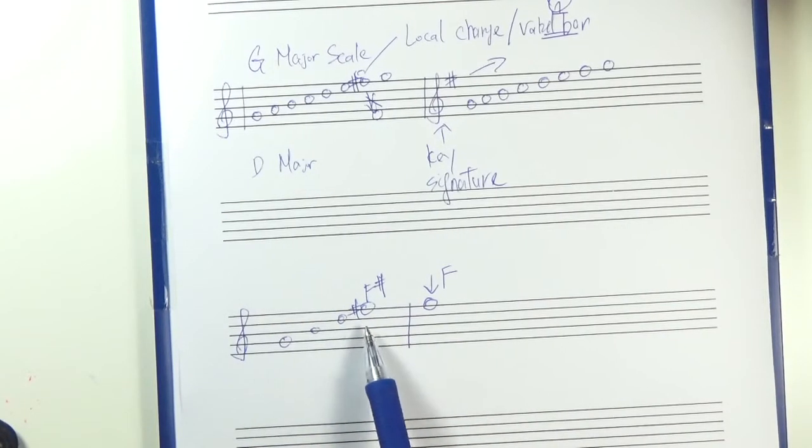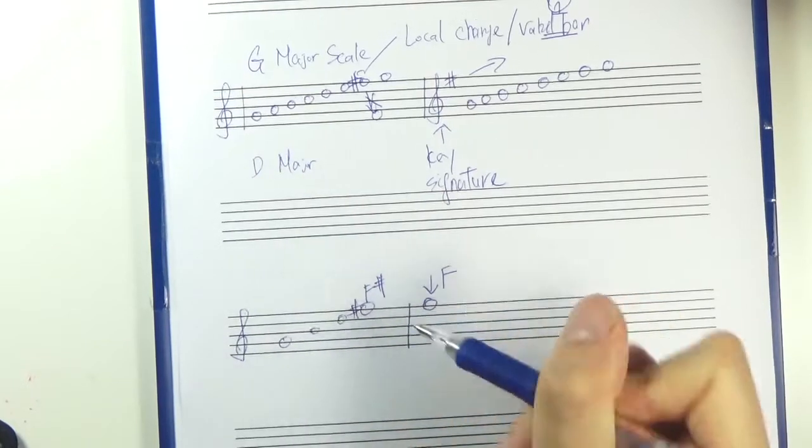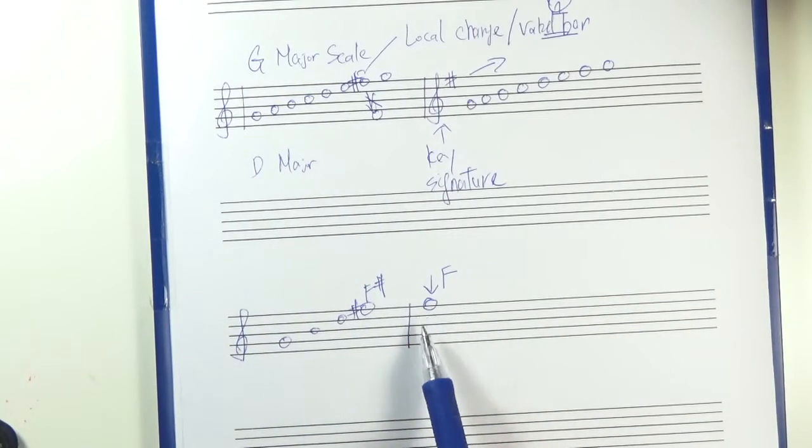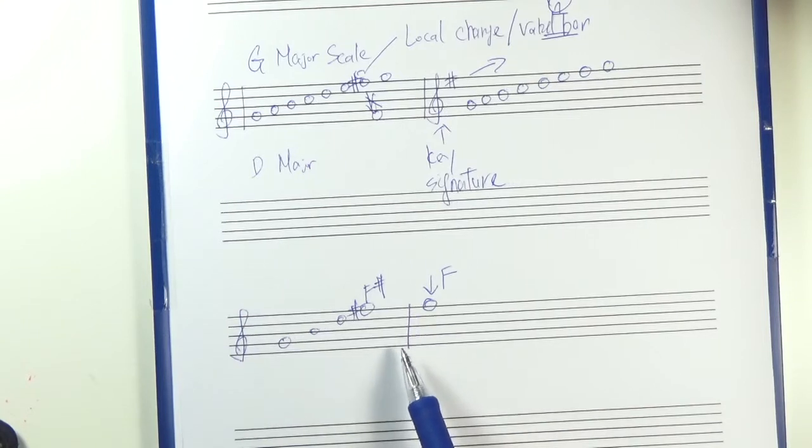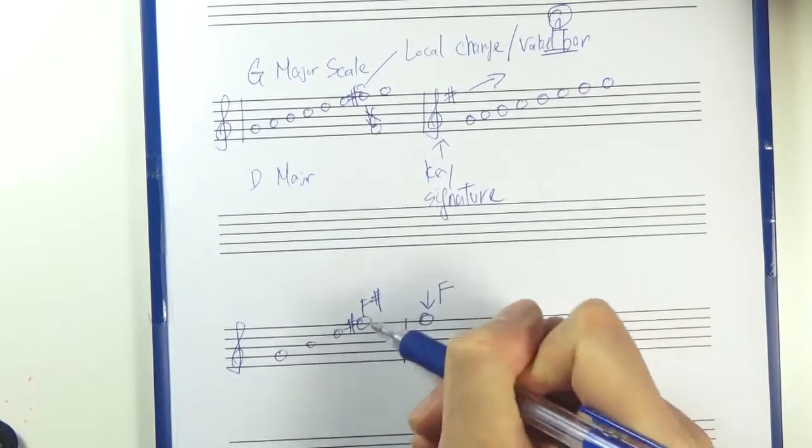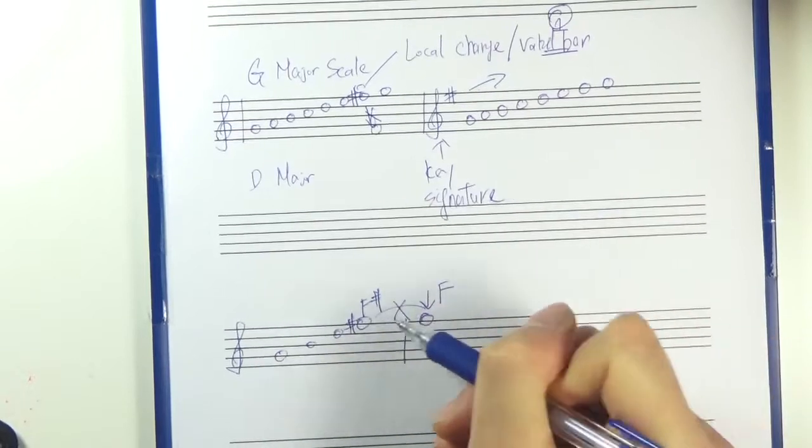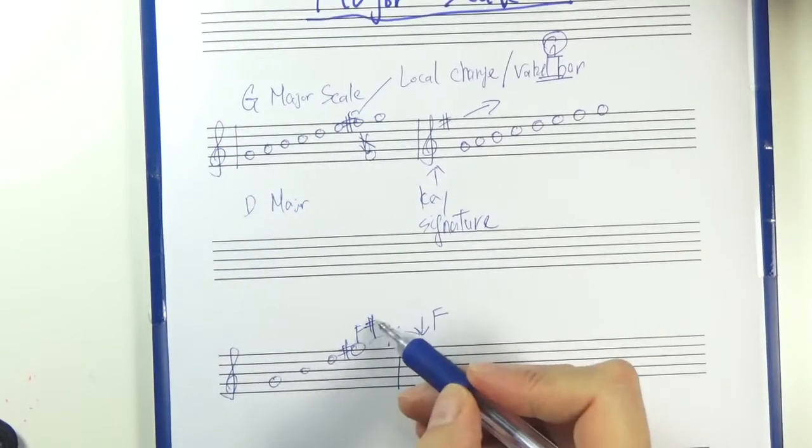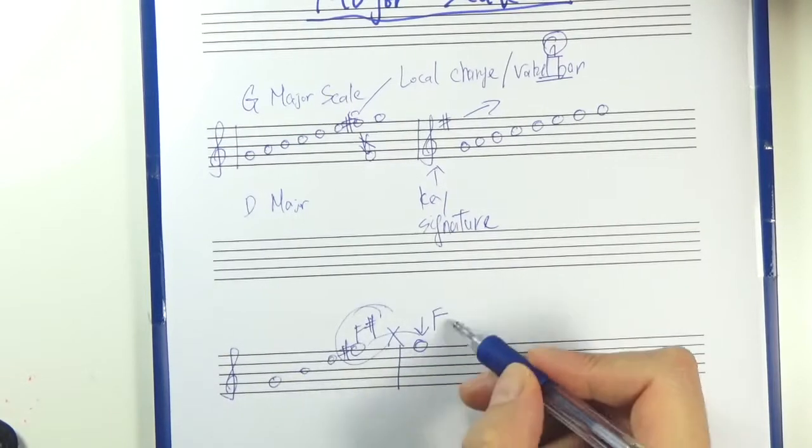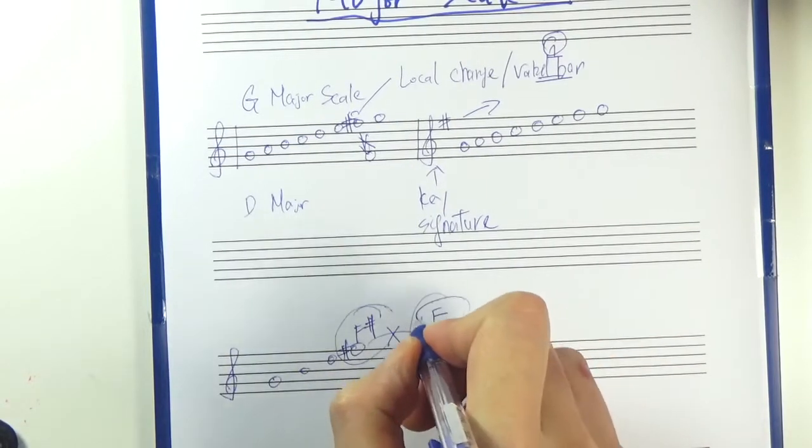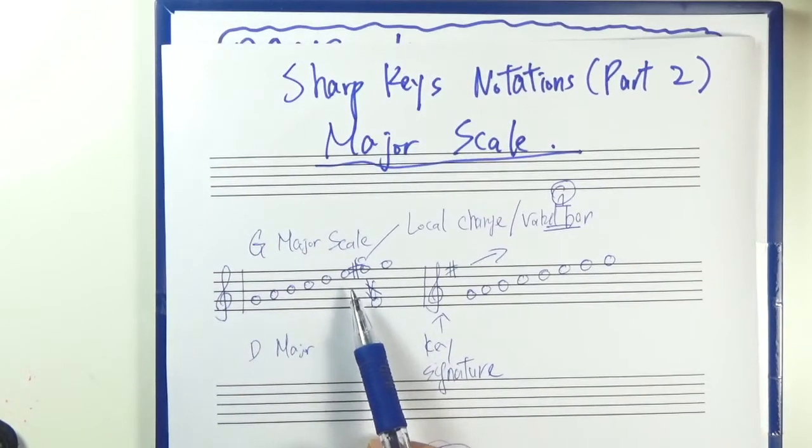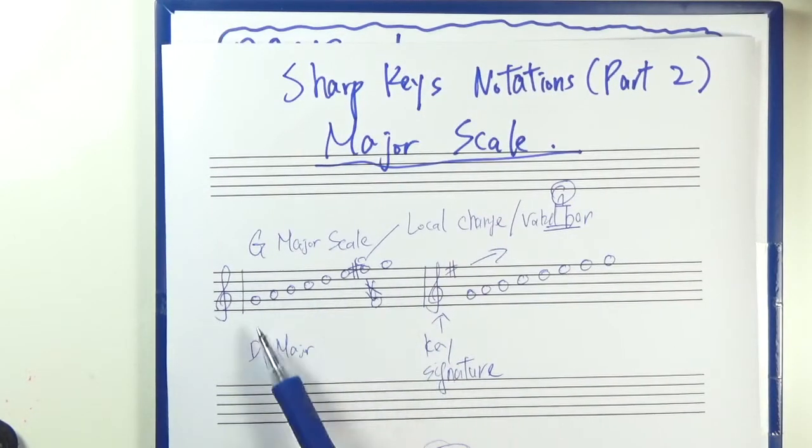So in music notation, whenever you have an accidental before any note, usually it's not carried over to the next bar. Unless there's a tie. So we'll look at that later on. So this is F sharp. When you go to the next bar, it becomes an F again. It gets cancelled. So this one here only affects one bar. It's a local change.